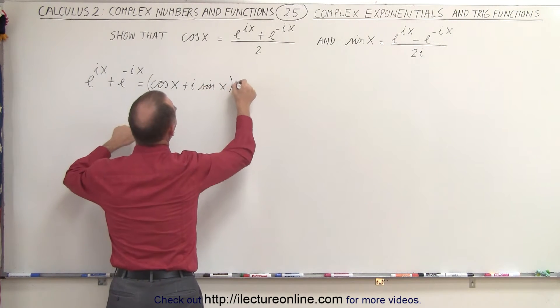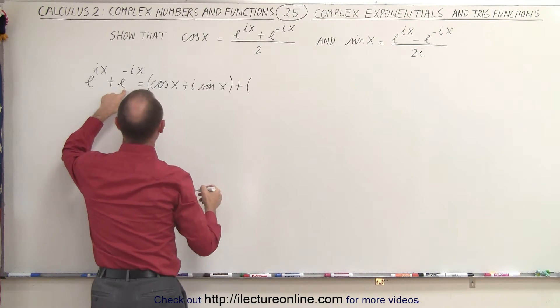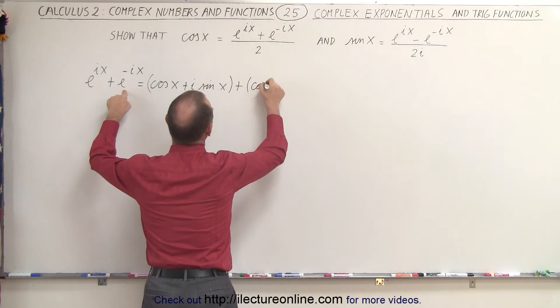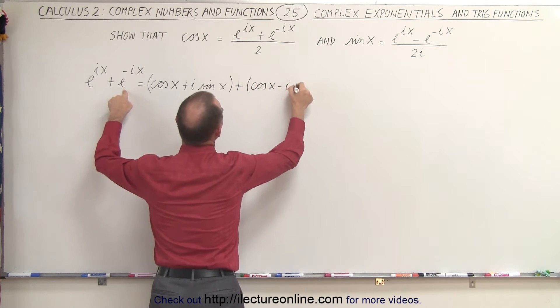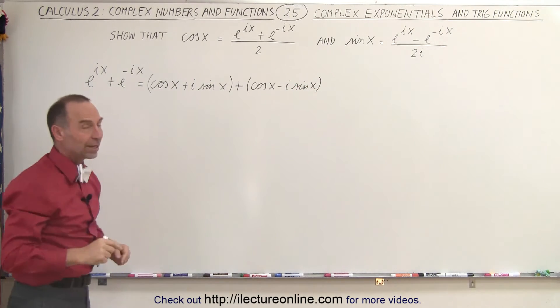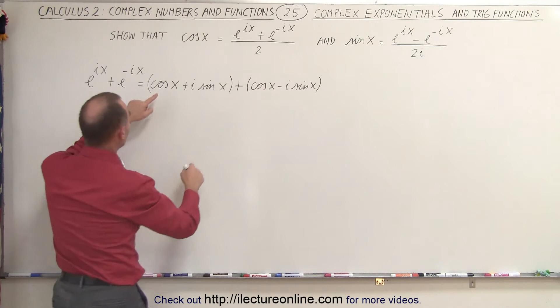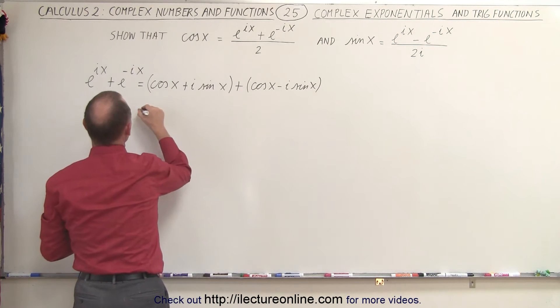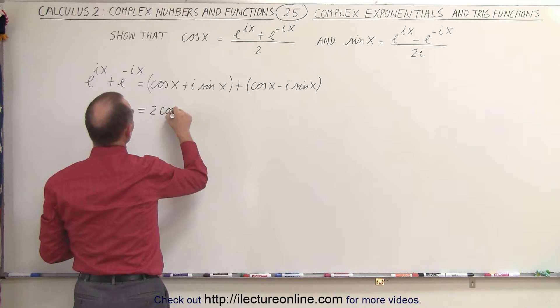And then we can add to that the expansion of this, which is the cosine of x minus i times the sine of x. So now when we add those two together, let's see what we get. The cosine of x plus the cosine of x, that's equal to twice the cosine of x.